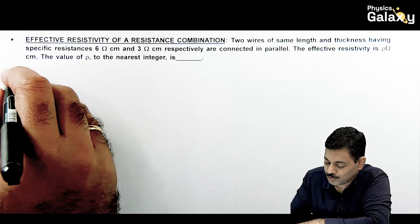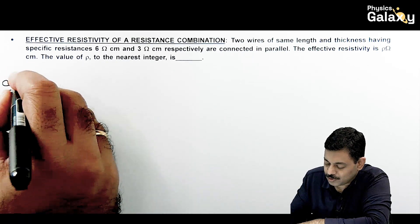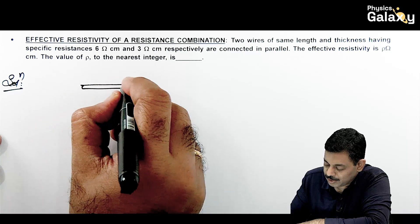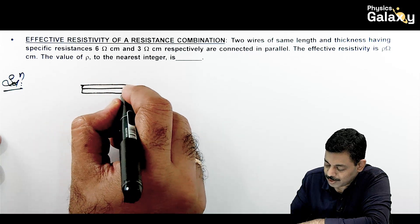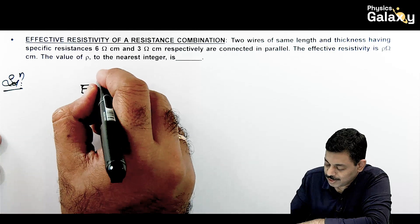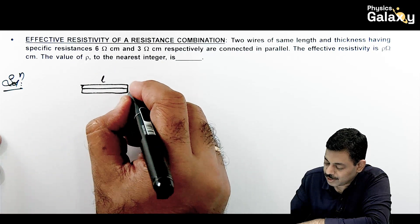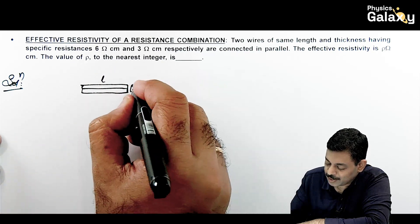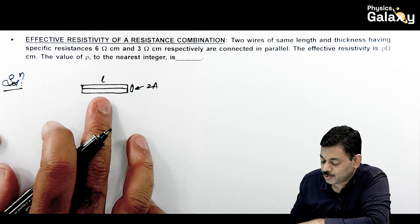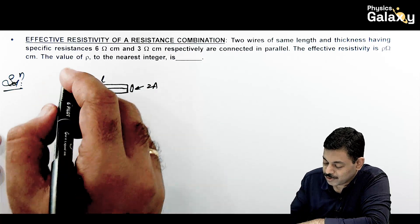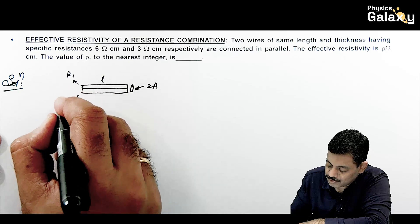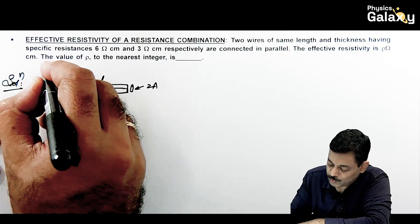In the solution, if two wires of same length and cross-sectional area are connected in parallel, the length remains L and the total cross-sectional area becomes twice the cross-sectional area of each wire, that is 2A. The resistance of the first wire is R1 = ρ₁L/A and the second wire is R2 = ρ₂L/A.